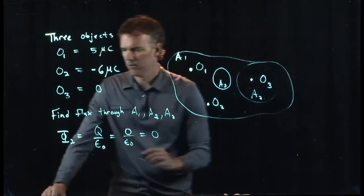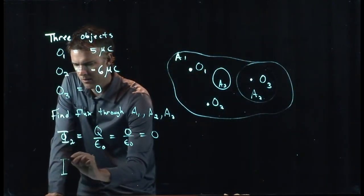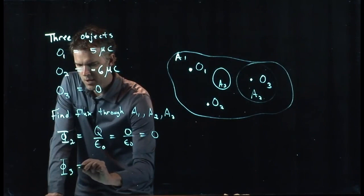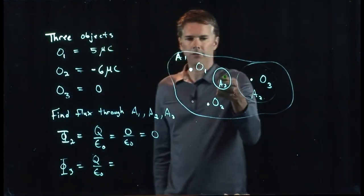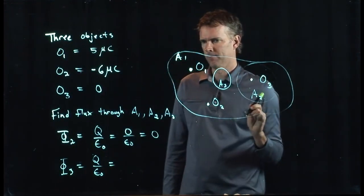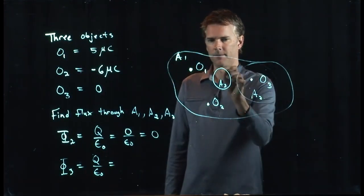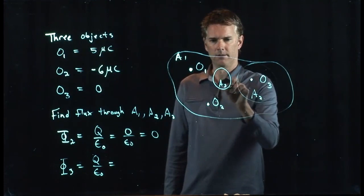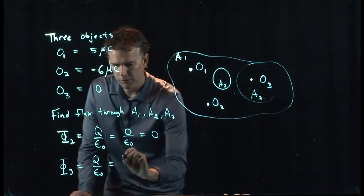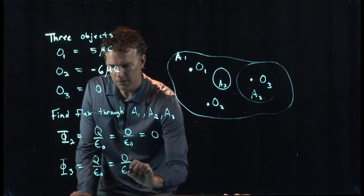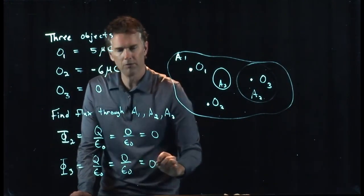What about phi 3? Phi 3 is also Q over epsilon naught. How much charge is enclosed in A3? Is there any charge in there? No. There's zero. Zero charge enclosed in A3, so that one is also zero.